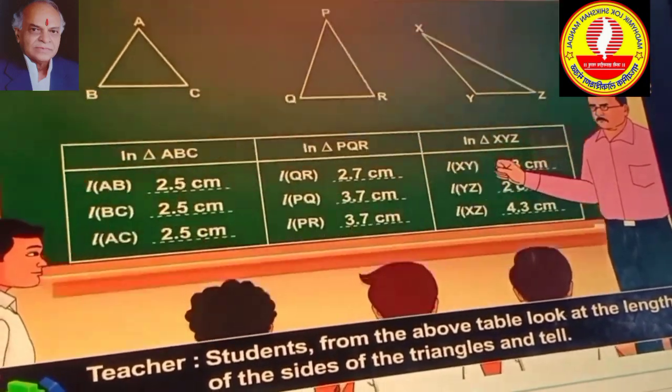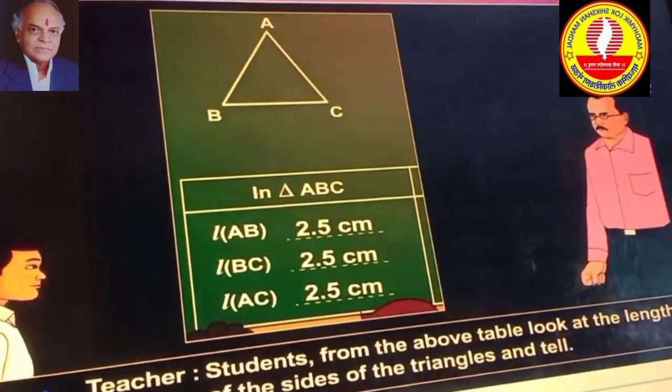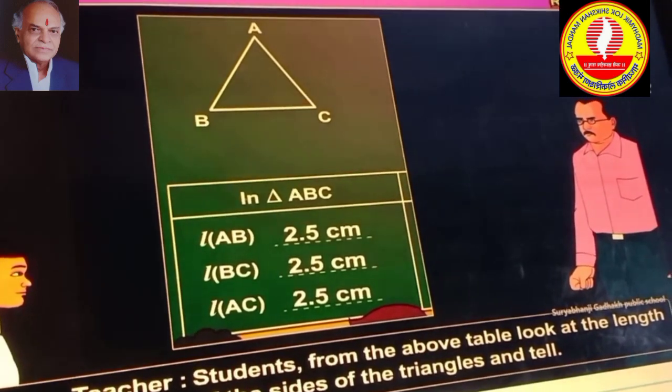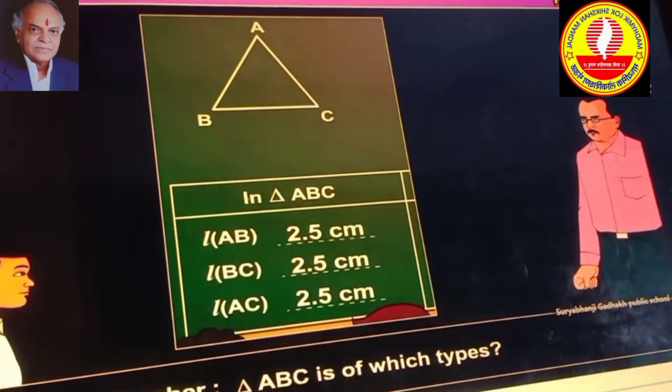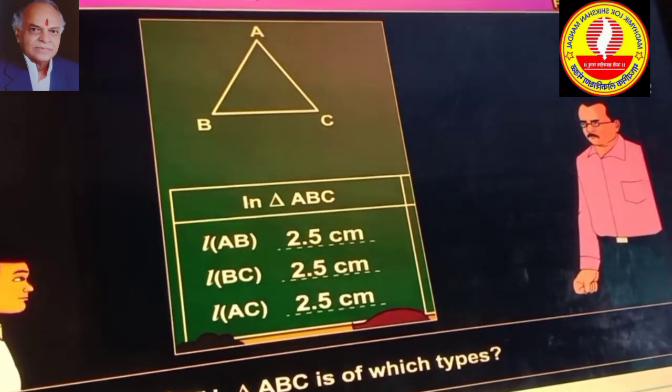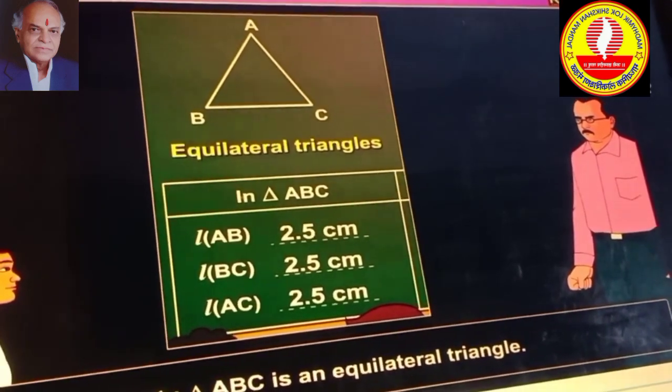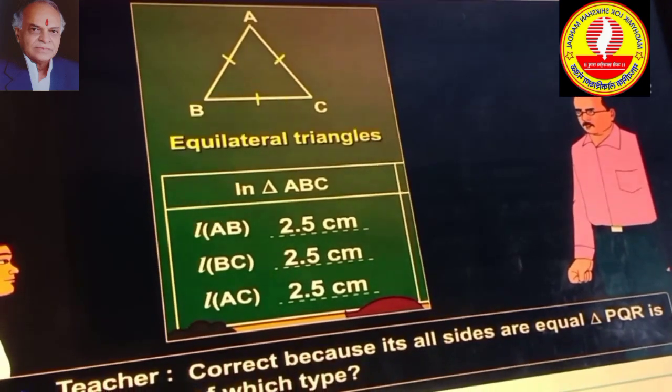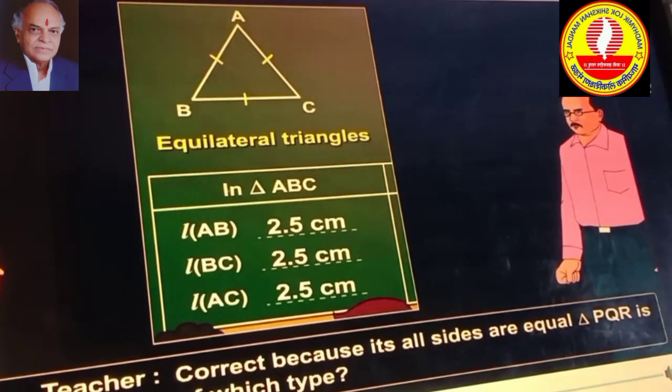Students, from the above table, look at the length of the sides of the triangles and tell, triangle ABC is of which type? Triangle ABC is an equilateral triangle. Correct, because its all sides are equal.